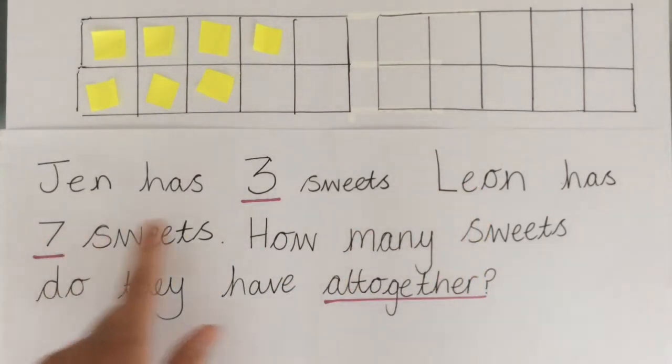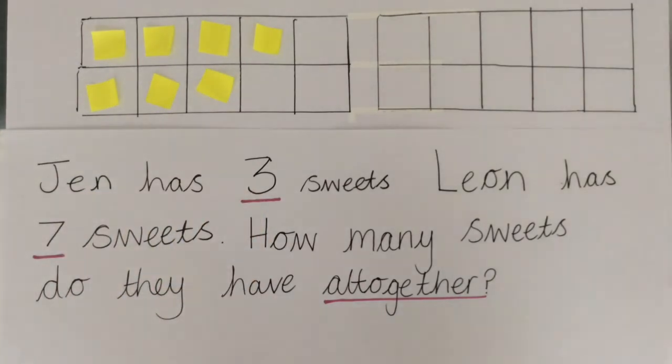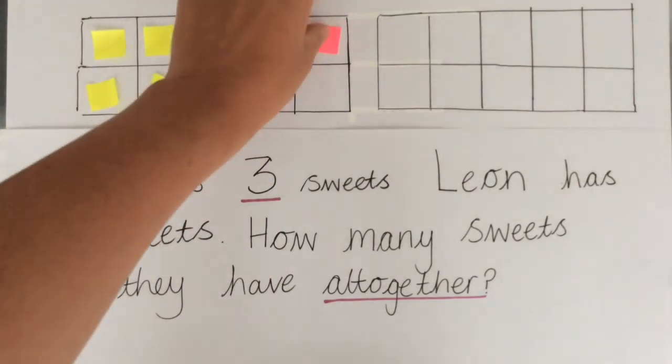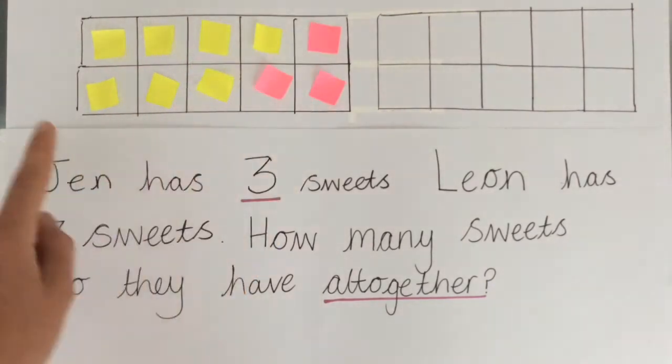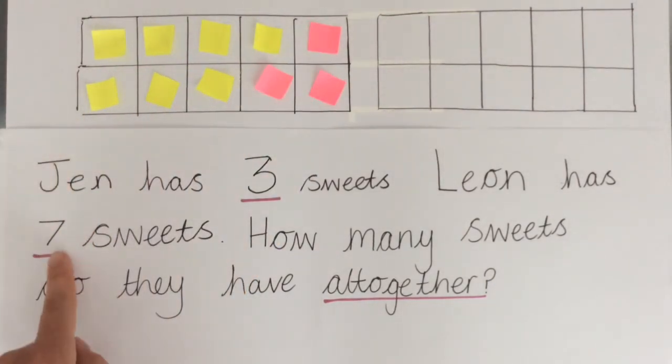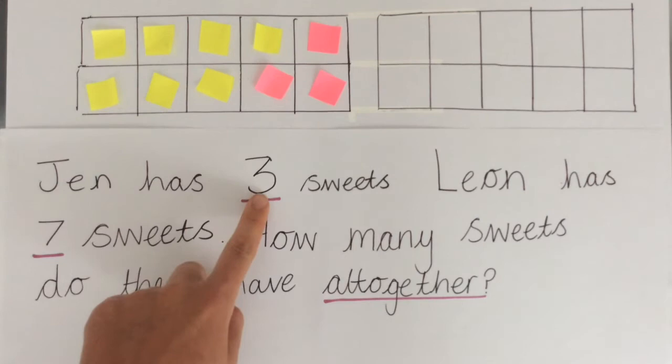Then we need to use the other number. So Jen has three sweets. So let's add Jen's three sweets. One, two, three.